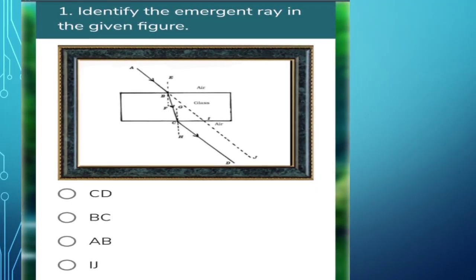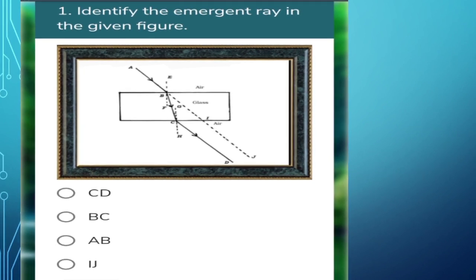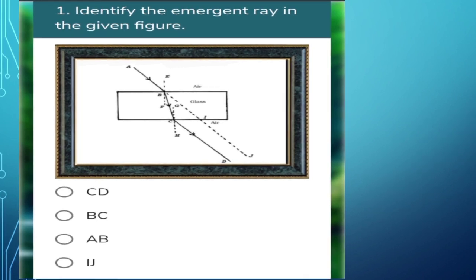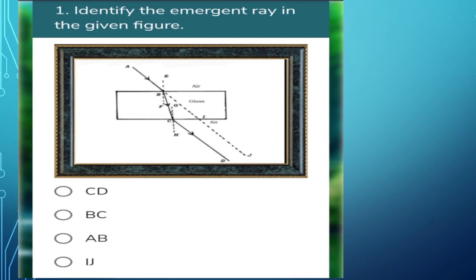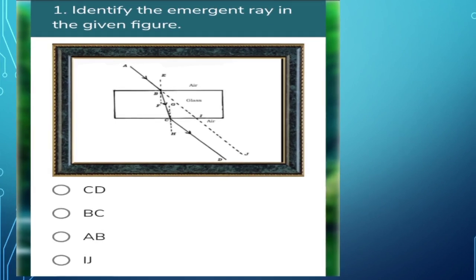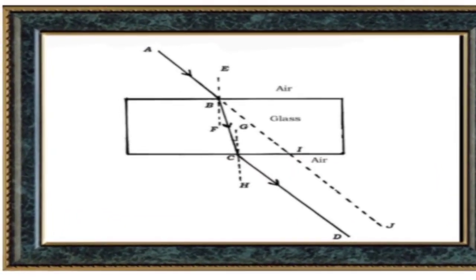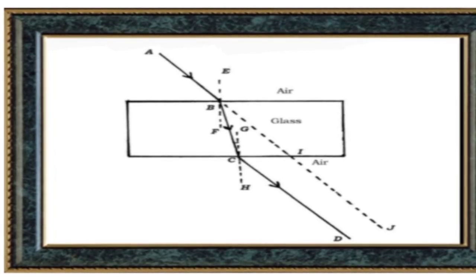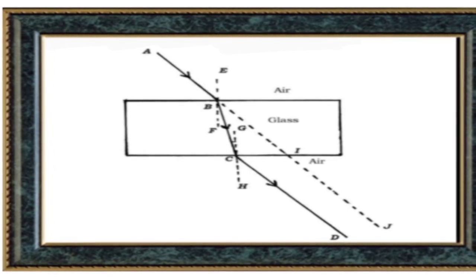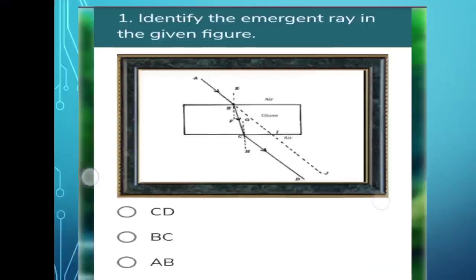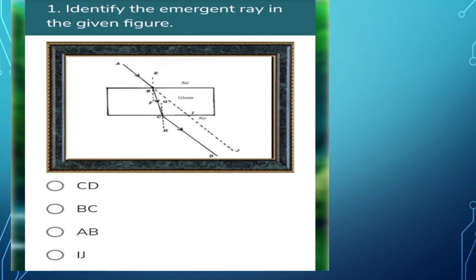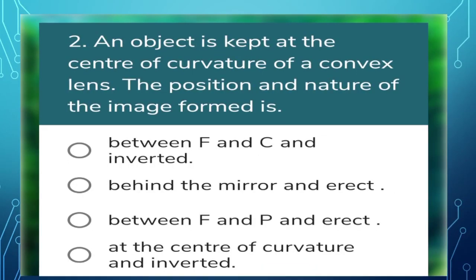Now, coming to this chapter — Light Reflection and Refraction. You have to do all the topics and questions as I say. Now, the first question: identify the emergent ray in the given figure. Here, AB is called the incident ray and CD is called the emergent ray. So CD is the answer — the first option is correct.